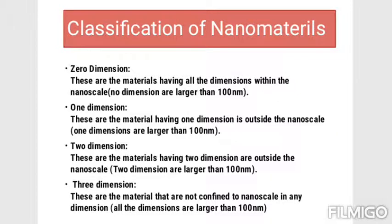Next is the classification of nanomaterials into four types: zero dimension, one dimension, two dimension, and three dimension. Zero-dimensional materials have all dimensions within the nanoscale — no dimension is larger than 100 nanometers. One-dimensional materials have one dimension outside the nanoscale, larger than 100 nanometers. Two-dimensional materials have two dimensions outside the nanoscale, both larger than 100 nanometers. Three-dimensional materials are not confined to the nanoscale in any dimension — all three dimensions are larger than 100 nanometers.